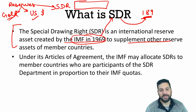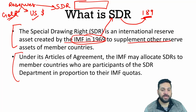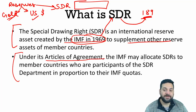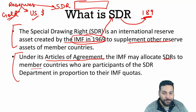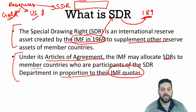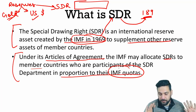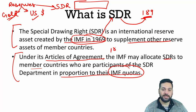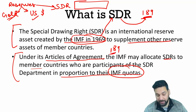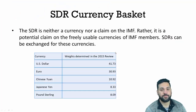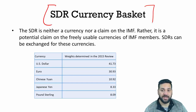Under the IMF's Articles of Agreement, the IMF may allocate SDRs to member countries who are participants of the SDR Department, in proportion to their IMF quotas. According to their IMF quotas, SDRs are divided among the 189 member countries.